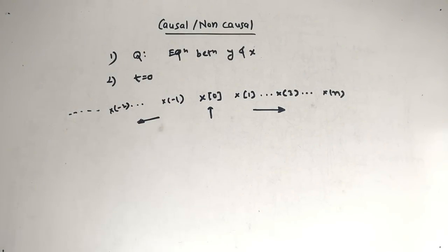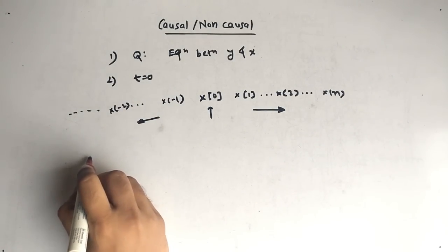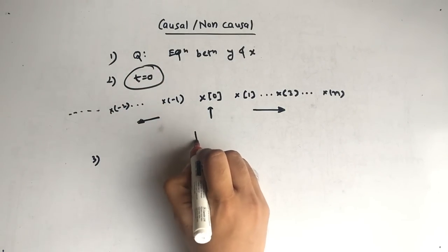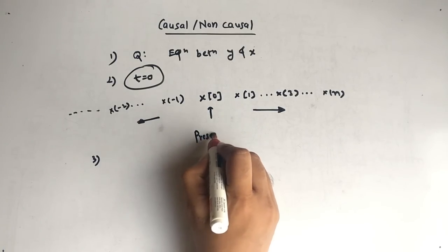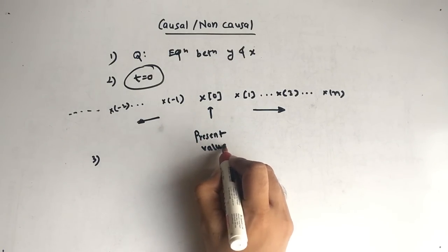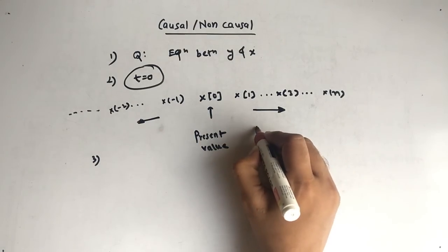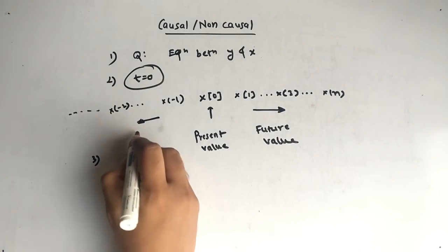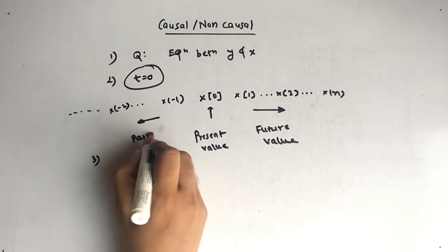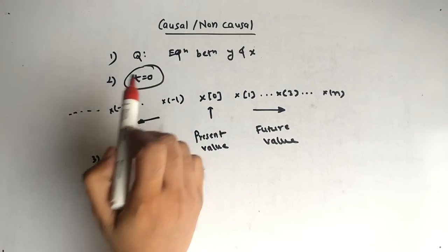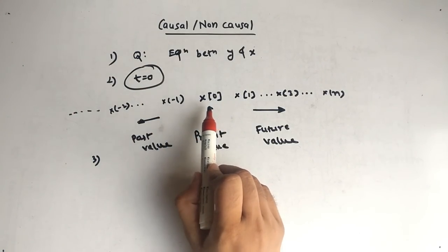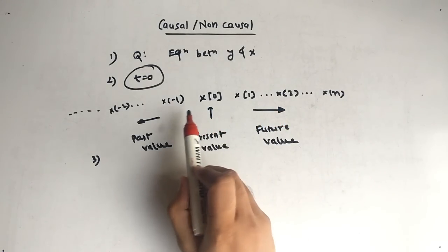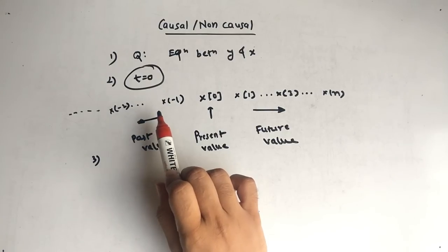So why is this important? What do these arrows mean? Whenever you put t equal to 0, you get the present value, or you can get a future value, or similarly you can get a past value. So when you put t equal to 0, either you can get x of 0 plus x of 3, or you can get x of 0 plus x of minus 2.